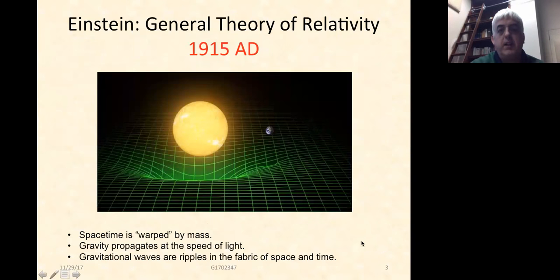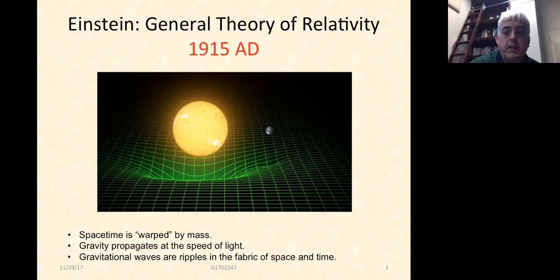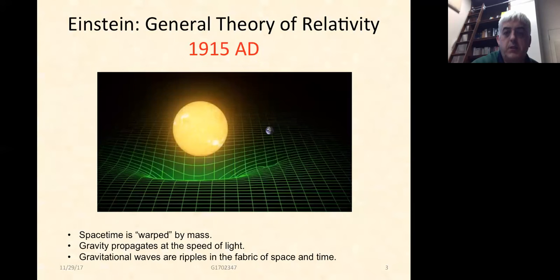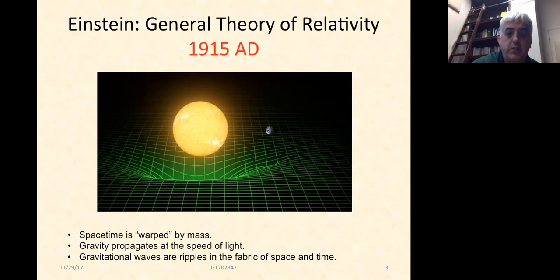In 1915, Einstein generalized his special theory of relativity to include gravity. Einstein's huge insight is that gravity is a little bit different from electromagnetic or other attractive and repulsive forces — it warps space and time. Just like a black hole in a bucket demo, you can think of space as being warped by the presence of mass. You too, in your own small way, warp space, but in an undetectable way. This is a simplified picture; treated three-dimensionally it would look quite different.